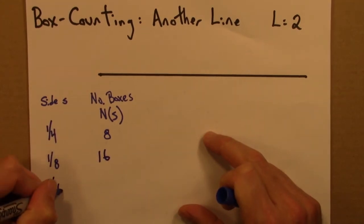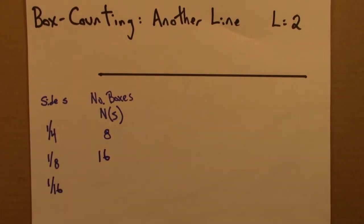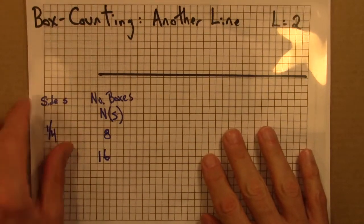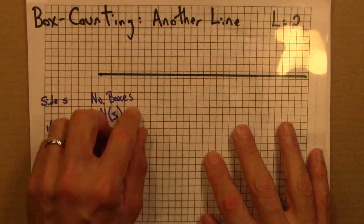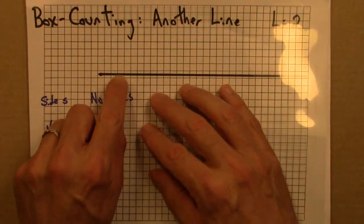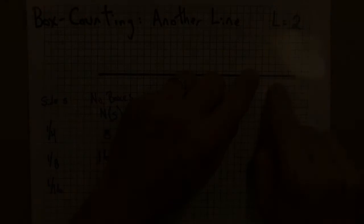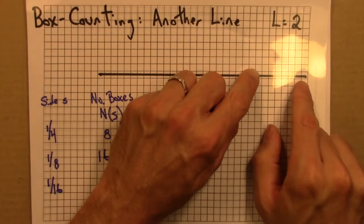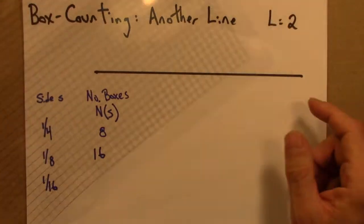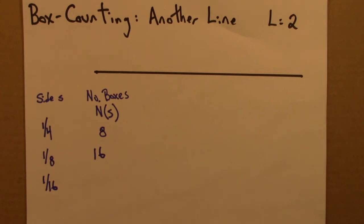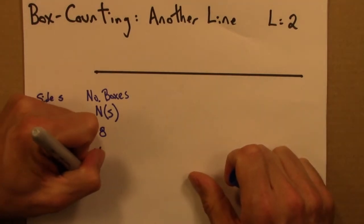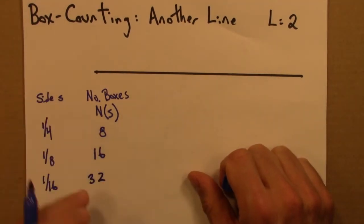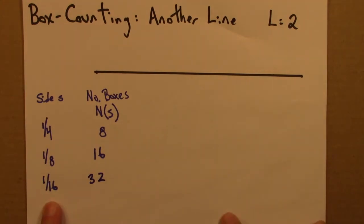And then let's do one more. What if the box size is a 16th? That's this. So what do I have here? 1, 2, 3, 4, 5, 6, 7... 28, 29, 30, 31, 32. So we get 32 boxes if the side is 1/16.